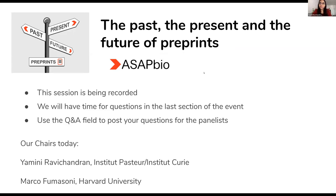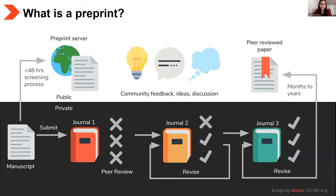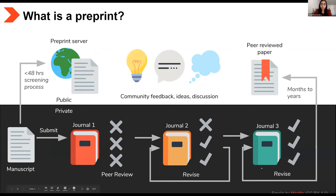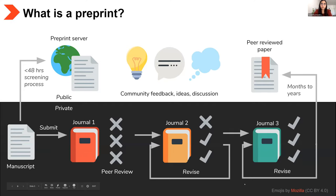Let's kick off with a brief overview. What exactly is a preprint? A preprint is a version of a scientific article preceding its peer-review process and its scholarly publication. The advantage of preprints is that they are easily accessible to the scientific community and can therefore receive feedback, ideas, and discussions. This process takes less than 48 hours, compared to the traditional peer-review and publication timeline.